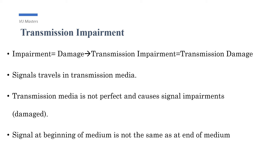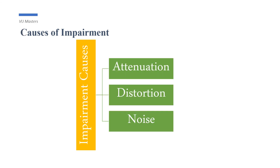So we call this transmission impairment. The signal was perfect when it was sent from the source, but when it reached the other device there was an impairment in the transmission media. We are talking about transmission impairment, and there are three types: the first one is attenuation, the second one is distortion, and the third one is noise.